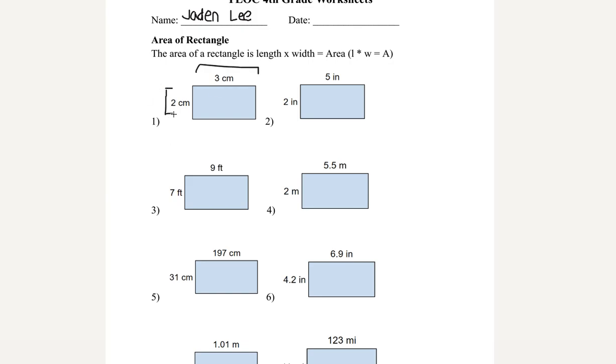As we can see, the length is 2 and the width is 3. And if we multiply the two together, we get 6. Now we've got to make sure to label 6 centimeters squared.